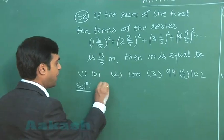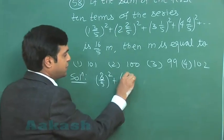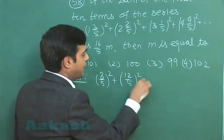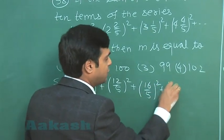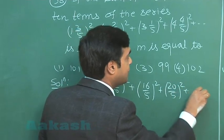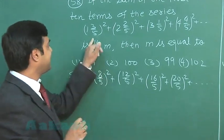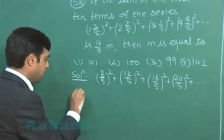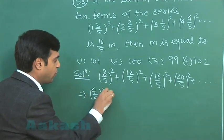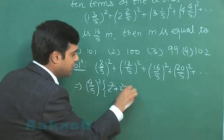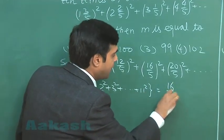We can see the given series, this is (8/5)² plus (10+2, that is 12/5)² plus (16/5)² plus (20/5)² and so on. The sum of first 10 terms is given to me 16/5 m. So if I take (4/5)² common, I will be left with 2² + 3² up to 11², this sum as 16/5 m.